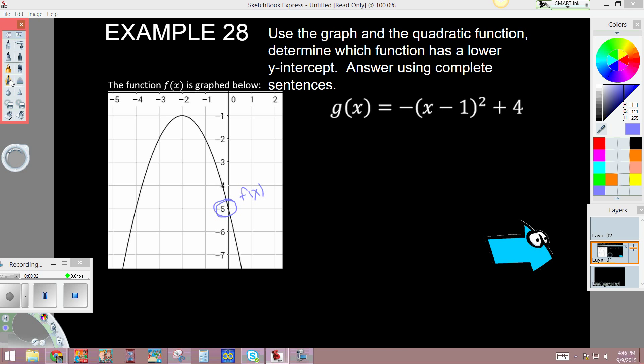So now we need to find g(x). We're going to need to expand this into standard form instead of vertex form. So we start by expanding that out. We have negative (x-1) times (x-1), and then don't forget about the plus 4. So now we distribute.